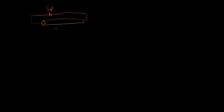We're going to say it's five volts, and we're going to say that this tube has a length of five meters. That's its length, and an area equal to 0.01 meters squared. Now we're going to say that the current going through the wire is equal to 1 amp, so I is equal to 1 amp.